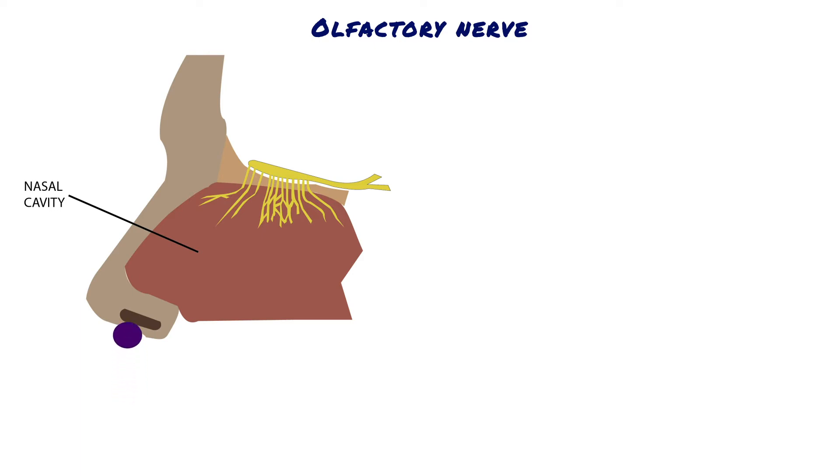When the scent molecules reach pars olfactaria, they dissolve in the mucus that covers the mucous layer and reach the receptors on the cilia.